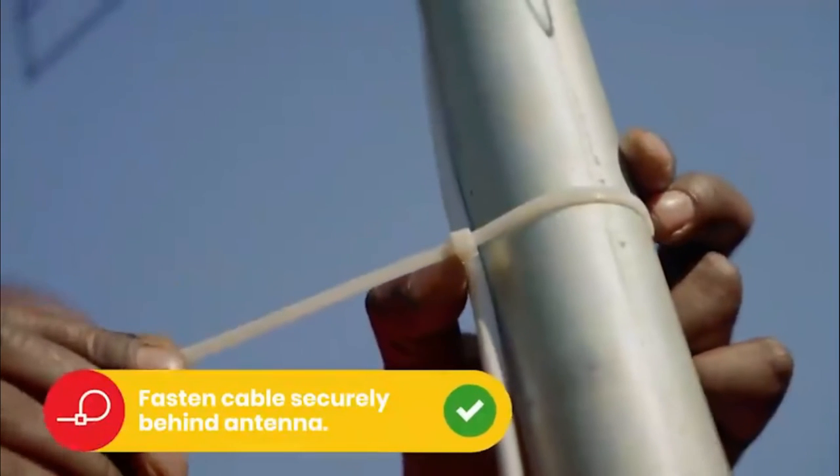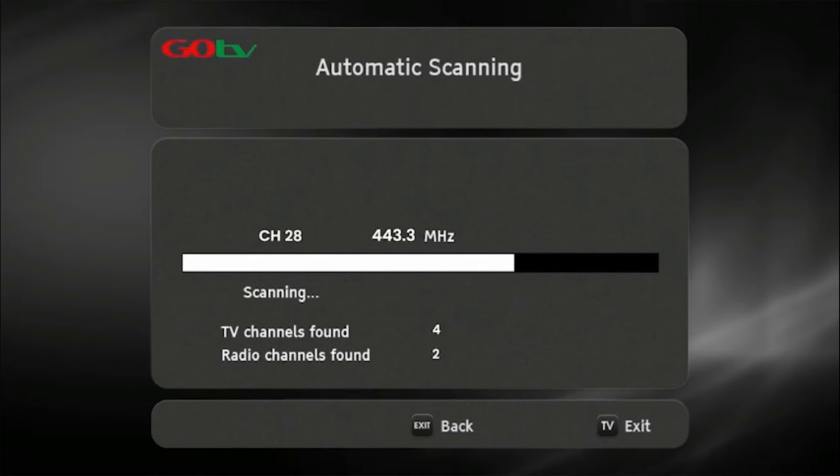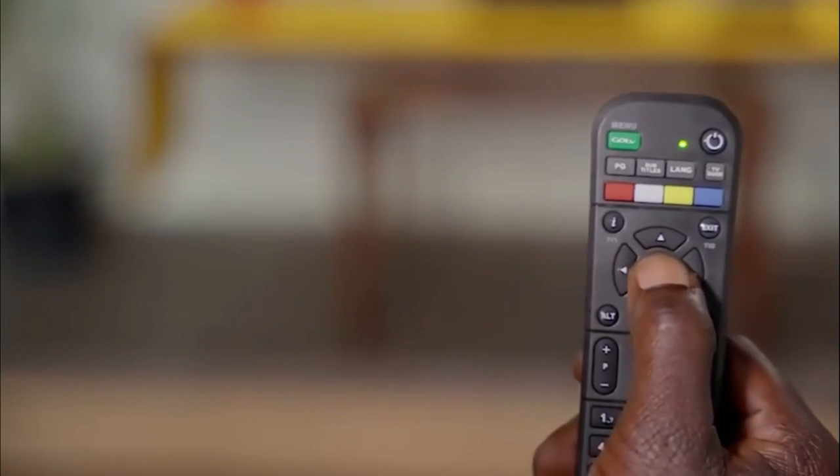Once you've optimized the signal, firmly tighten the antenna into position. Now, do a full-service scan so that the decoder can update and save the full-service list. Once the decoder has finished scanning, the number of channels acquired will be indicated on the TV screen. Now, press OK to continue. The GoCoder will take you to the Go channel.